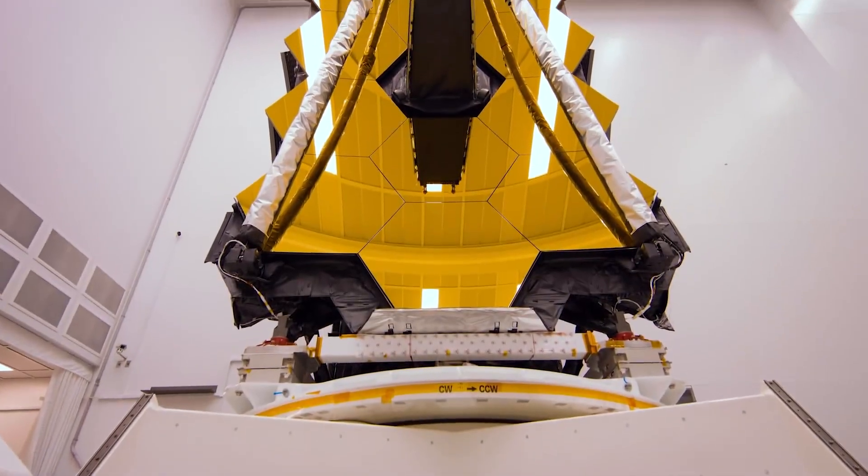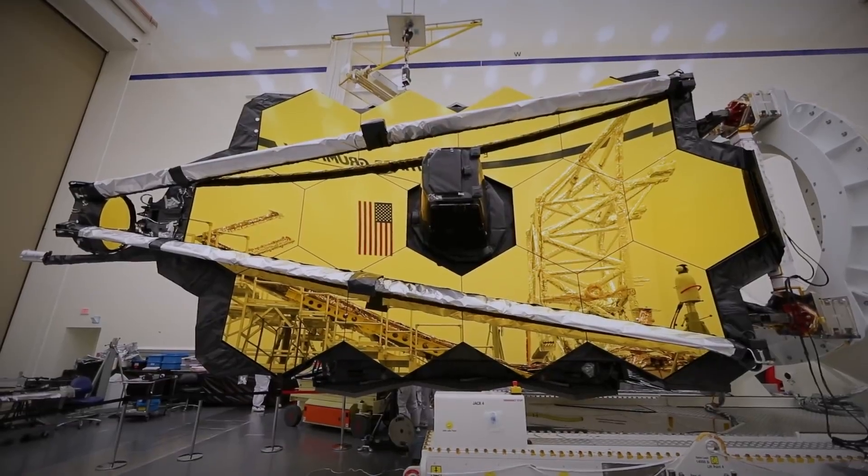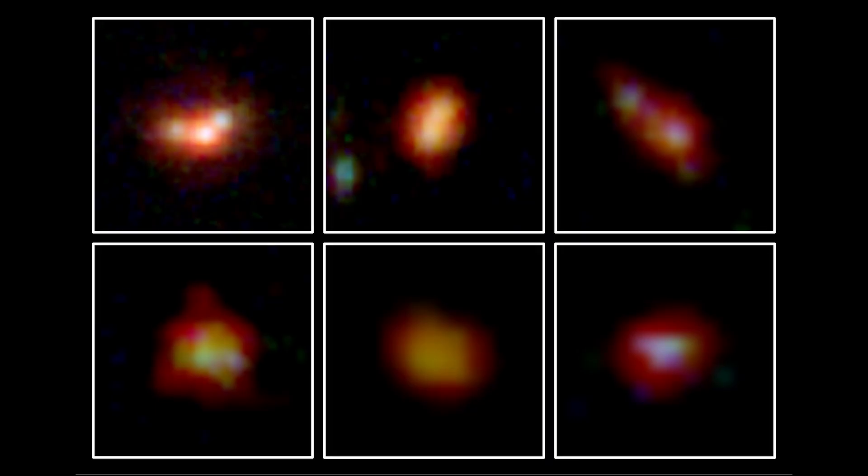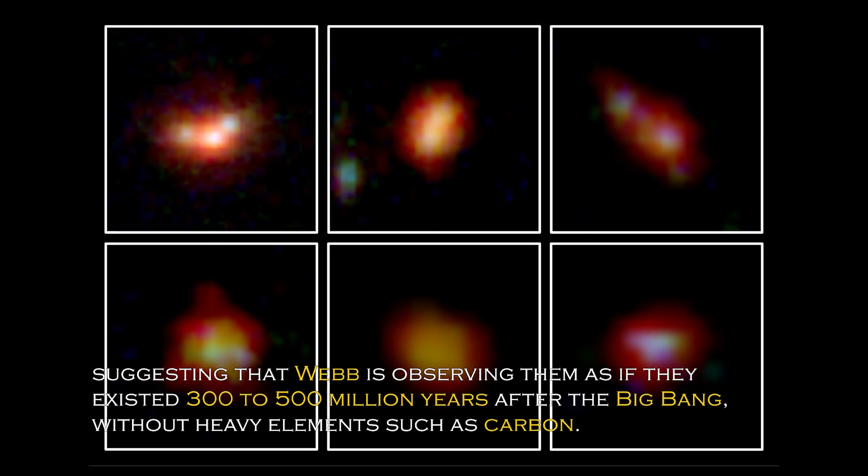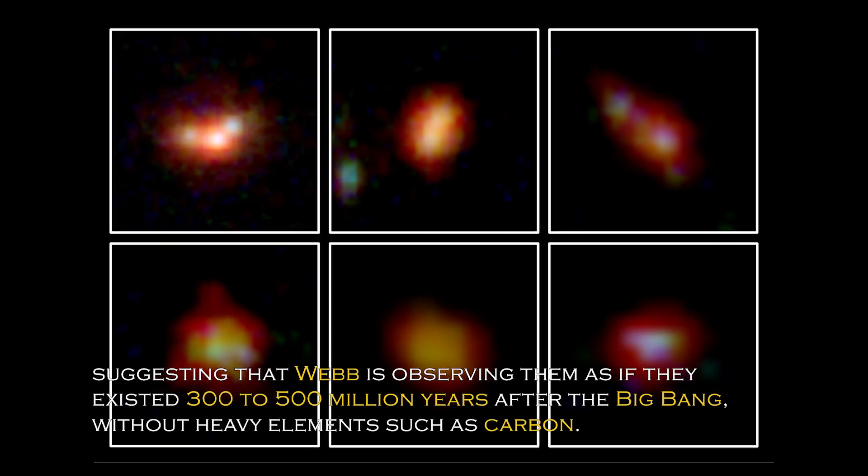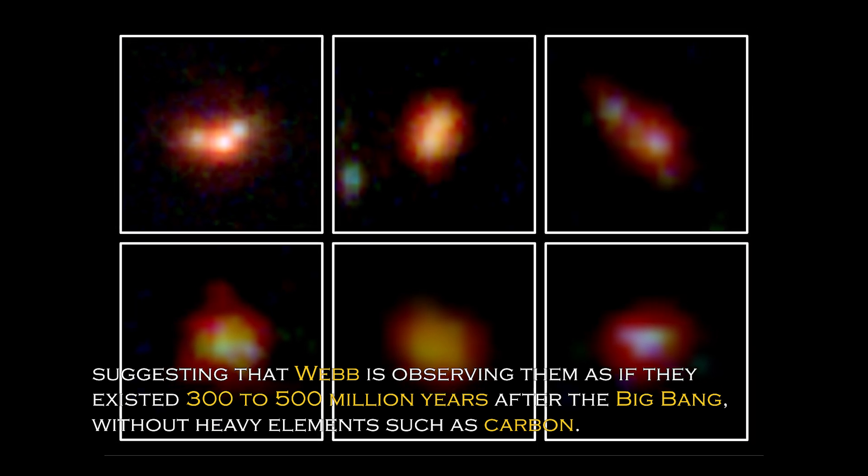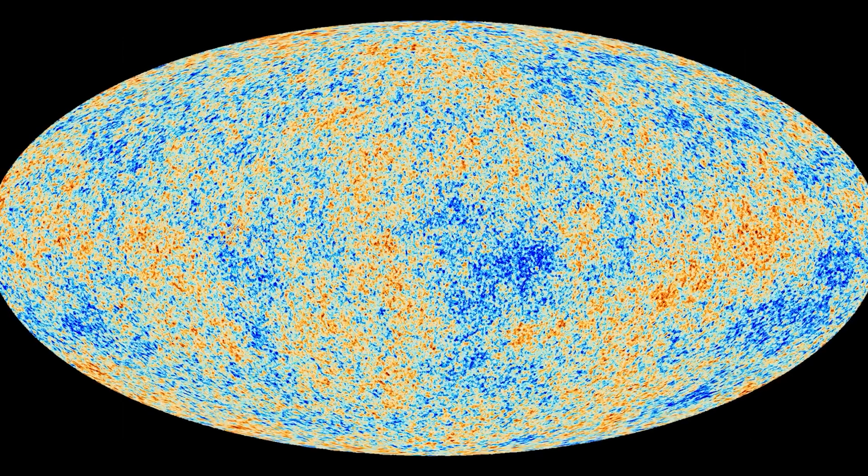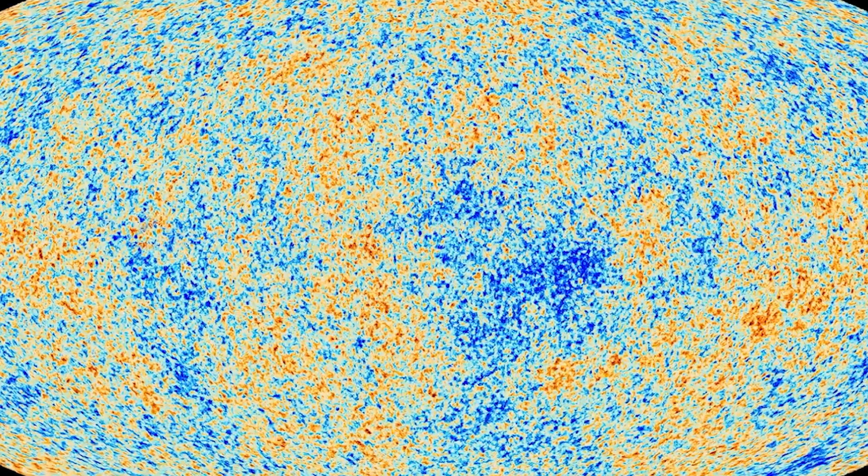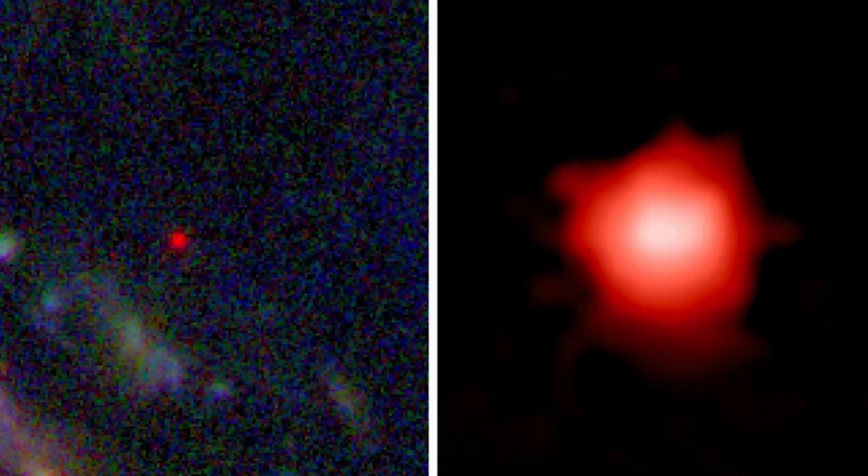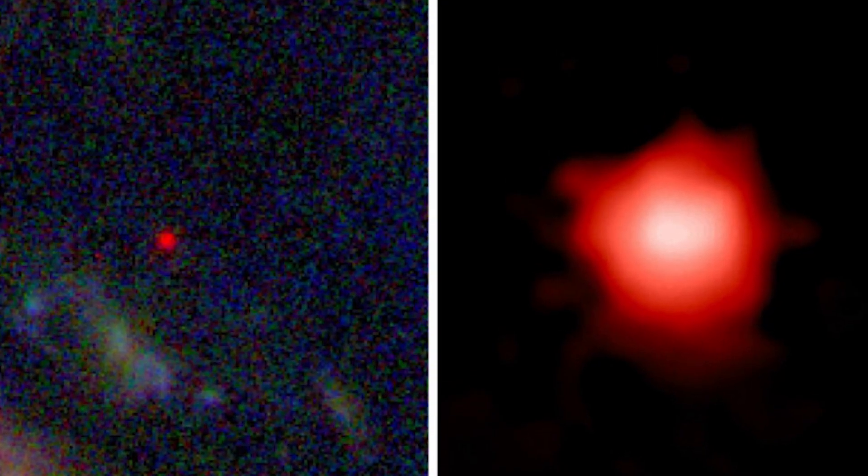Data obtained from Webb's spectrometer and near-infrared camera have revealed that four of the six primordial galaxies have extreme redshifts, suggesting that Webb is observing them as if they existed 300 to 500 million years after the Big Bang, without heavy elements such as carbon. This is surprising since the universe is estimated to be 13.8 billion years old, and the existence of these galaxies suggests that we need to revise our understanding of the early universe.